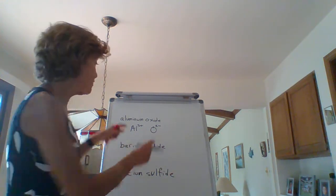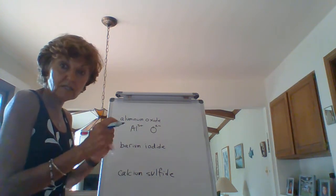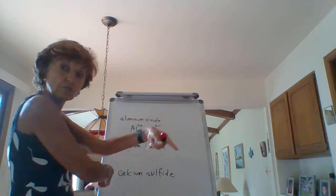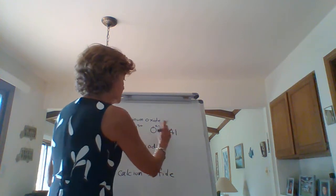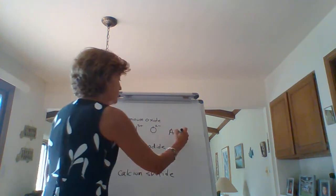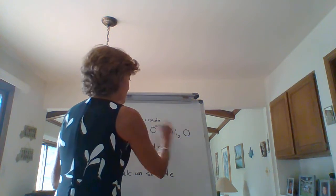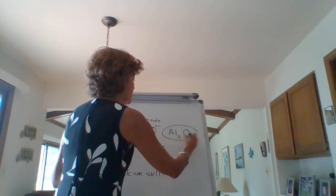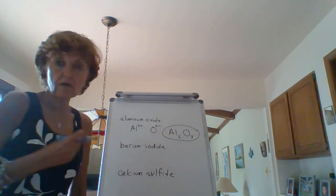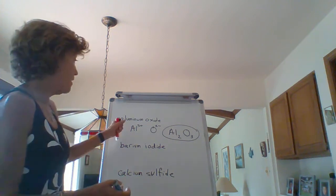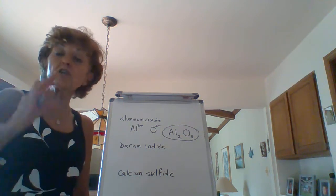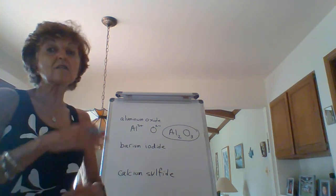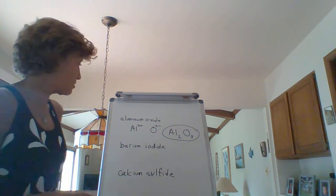Then what do you do? You take the numbers, not the pluses and the minuses. You take the numbers and you just crisscross them. So you go Al, they have to be subscripts, you bring the two down here and the three over here. And you've got the perfect formula of this binary compound. This is the formula for aluminum oxide. This is huge. If you can do this, this is a big deal in chemistry.